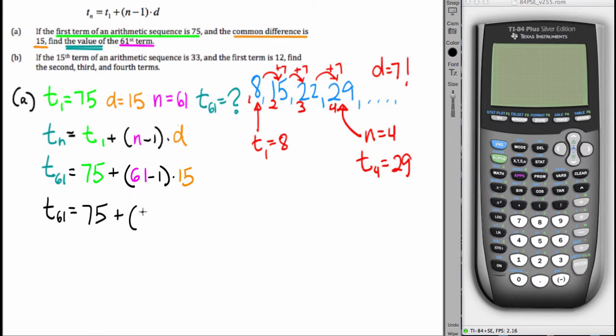T61 equals 75 plus 60 times 15. T61 is 75 plus 900. T61 is 975.